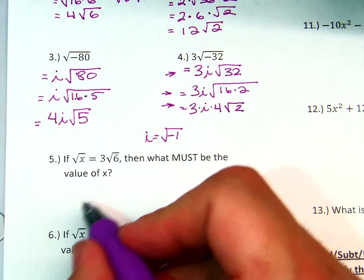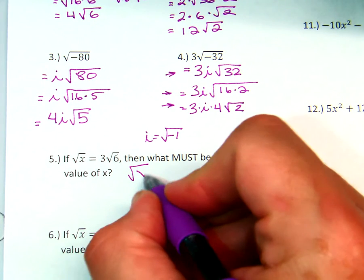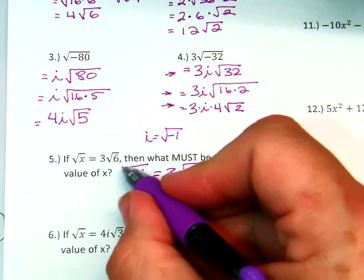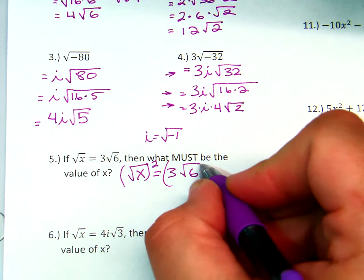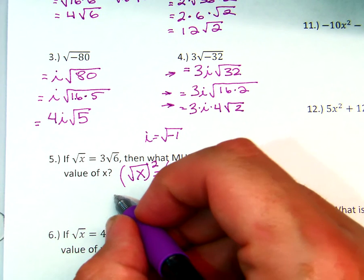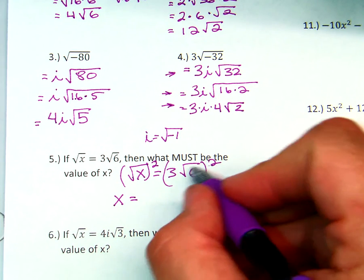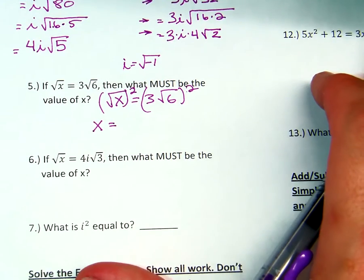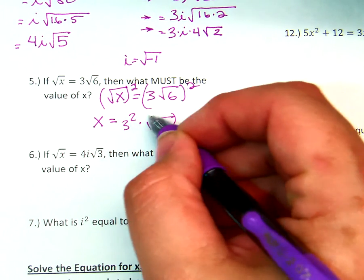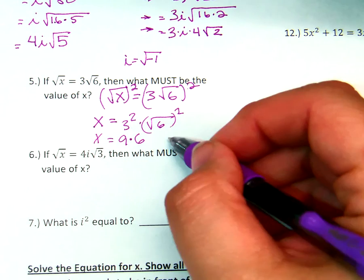Alright, now what's the value of x that makes this work? The square root of x has to equal 3 times the square root of 6. In order to get rid of a square root, I've got to square that side and square this side. You square the square root — what do you get? x. You're going to distribute the square to both sides, so we'll get 3 squared times the square root of 6 squared, which is 9 times 6. So x is equal to 54.